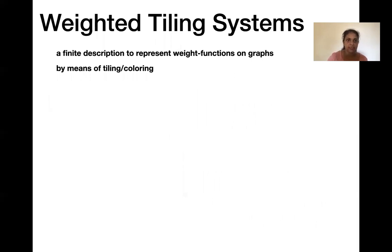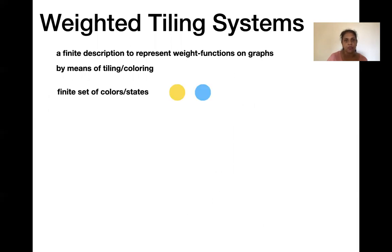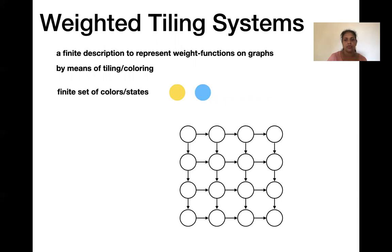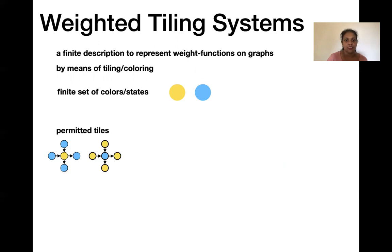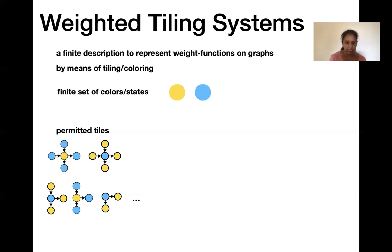Weighted tiling systems are a finite description to represent weight functions on graphs, by means of a finite tiling or coloring. We have a finite set of colors or states — for example yellow and blue — and a graph receives a coloring where every vertex gets a color. To get a weight for a coloring, we first allow only some tiles: there is a set of permitted tiles. Each permitted tile has a central vertex and its neighbors, and assigns colors to them.